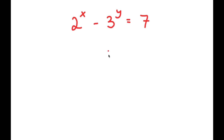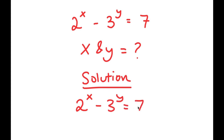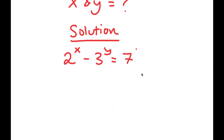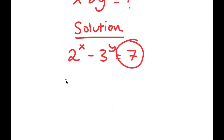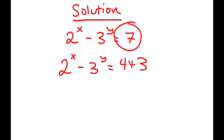In this problem I have 2 to the power of x minus 3 to the power of y equals 7, and I'm going to find the values of x and y. For my solution, I'm going to rewrite 7 as 4 plus 3, so now I have 2 to the power of x minus 3 to the power of y equals 4 plus 3.